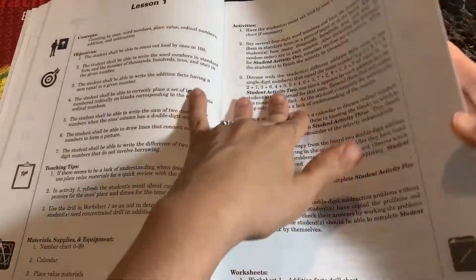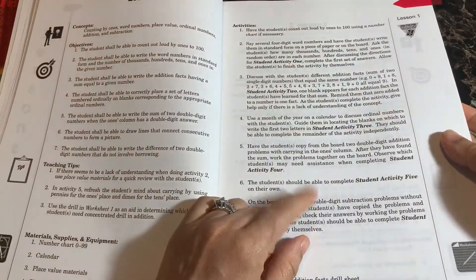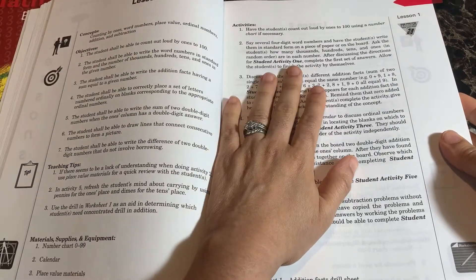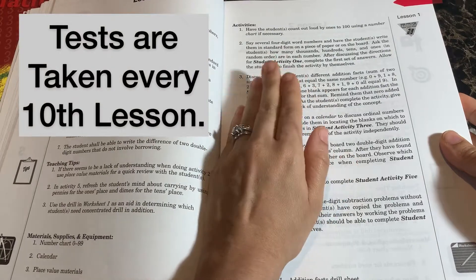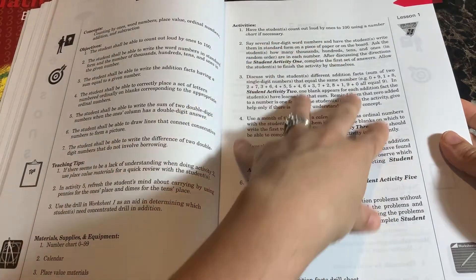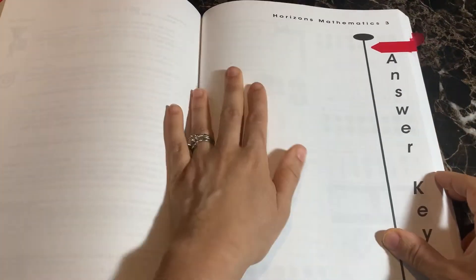So the next section after all, so they have this for all of your lessons. There are 160 lessons in this course, and then there are tests every 10 lessons. So every 10 lessons, you will have a test and there's 160 lessons. And that is true for all of the levels. So not just third grade, but all of the levels.